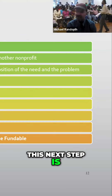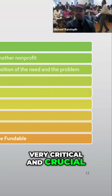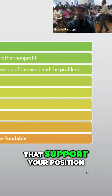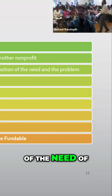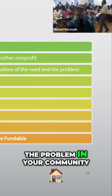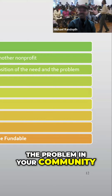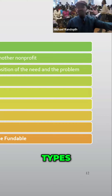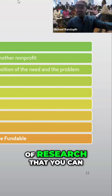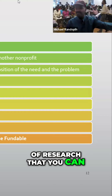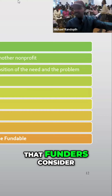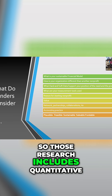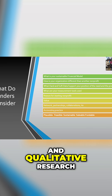This next step is very critical and crucial. It talks about what hard and soft data supports your position regarding the need of the problem in your community. This is when we begin to talk about the two most important types of research that you can bring to the table that funders consider — quantitative and qualitative research.